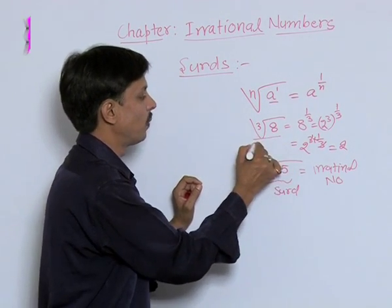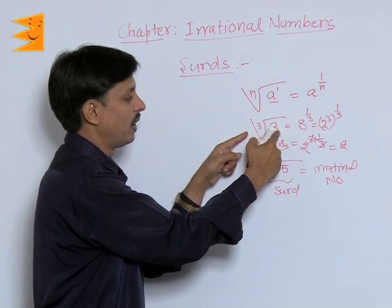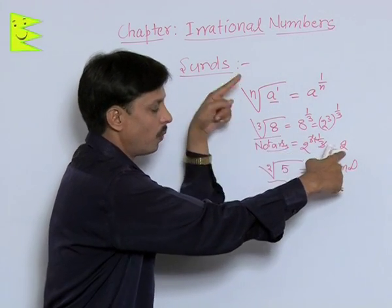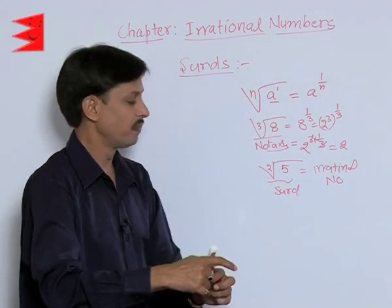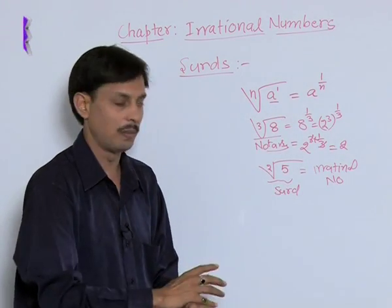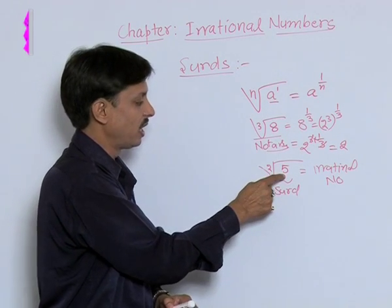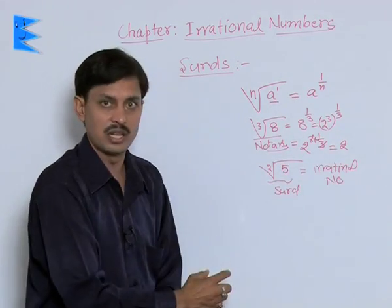Whereas cube root of 8 is not a SIRd. What is the reason that cube root of 8 is not a SIRd? Because its net answer is 2, which is a rational number. But as per definition of SIRd, there are three things to remember: order must be 2 or more, radicand must be rational, and final answer should always be irrational.